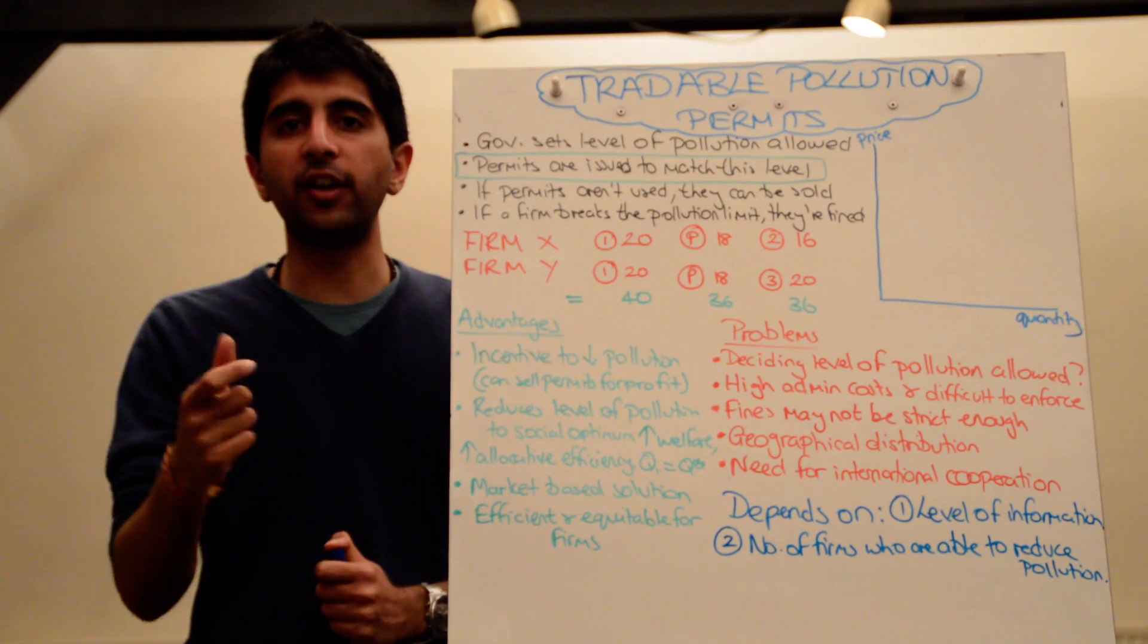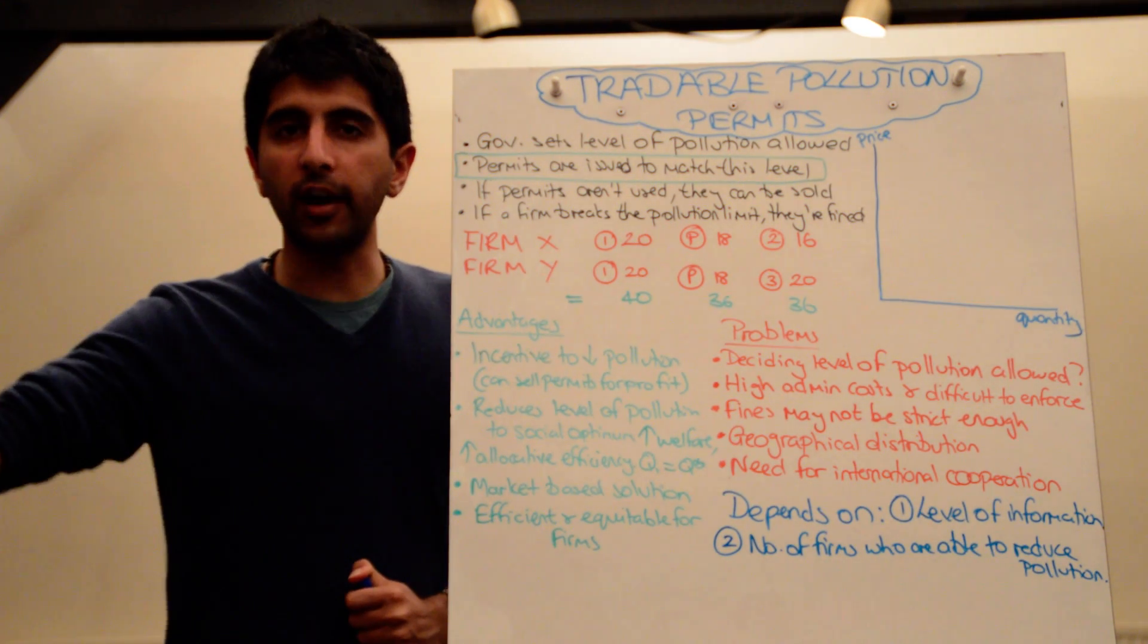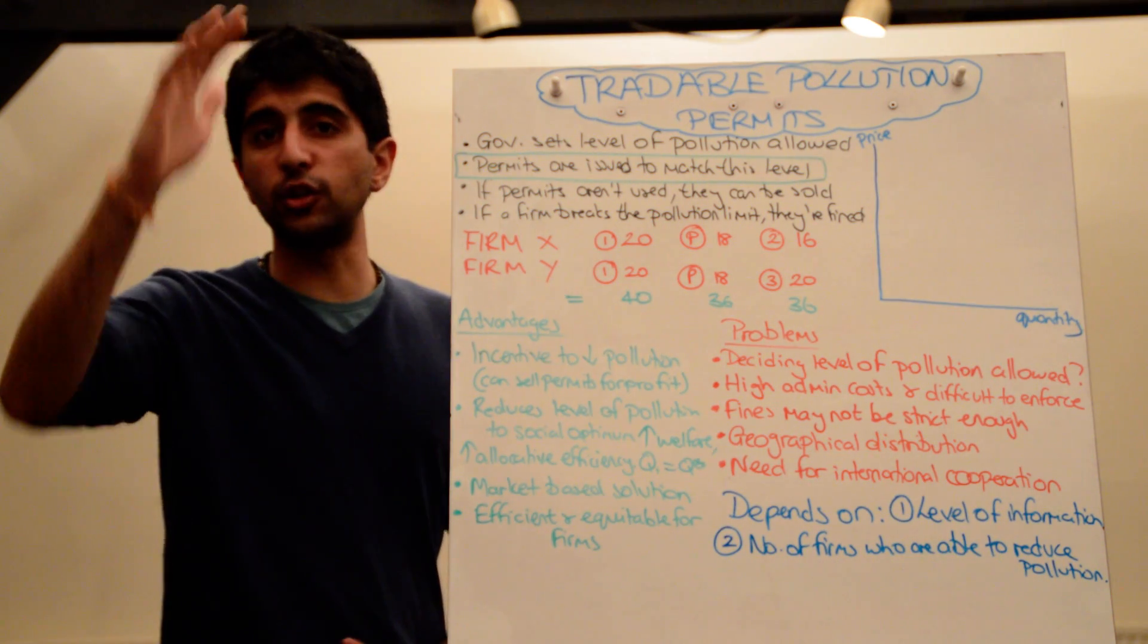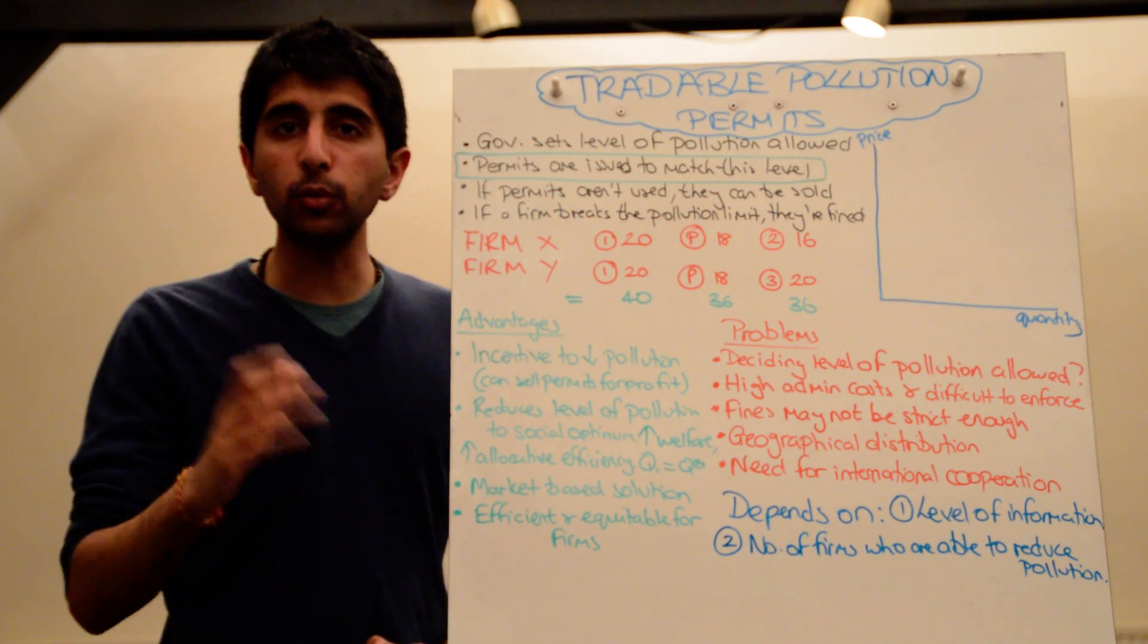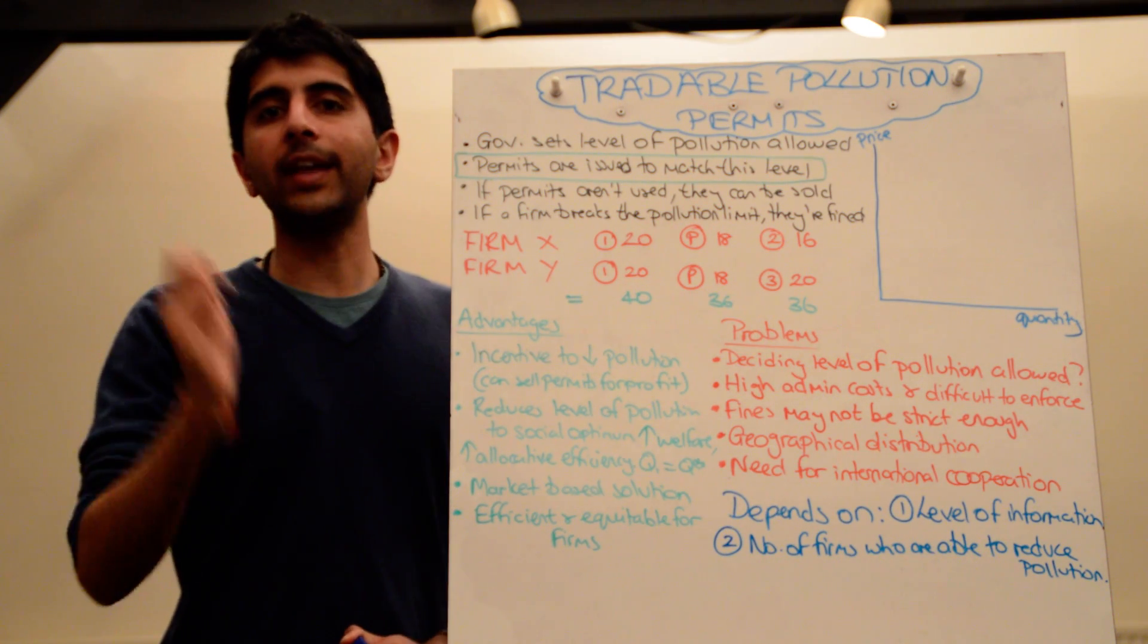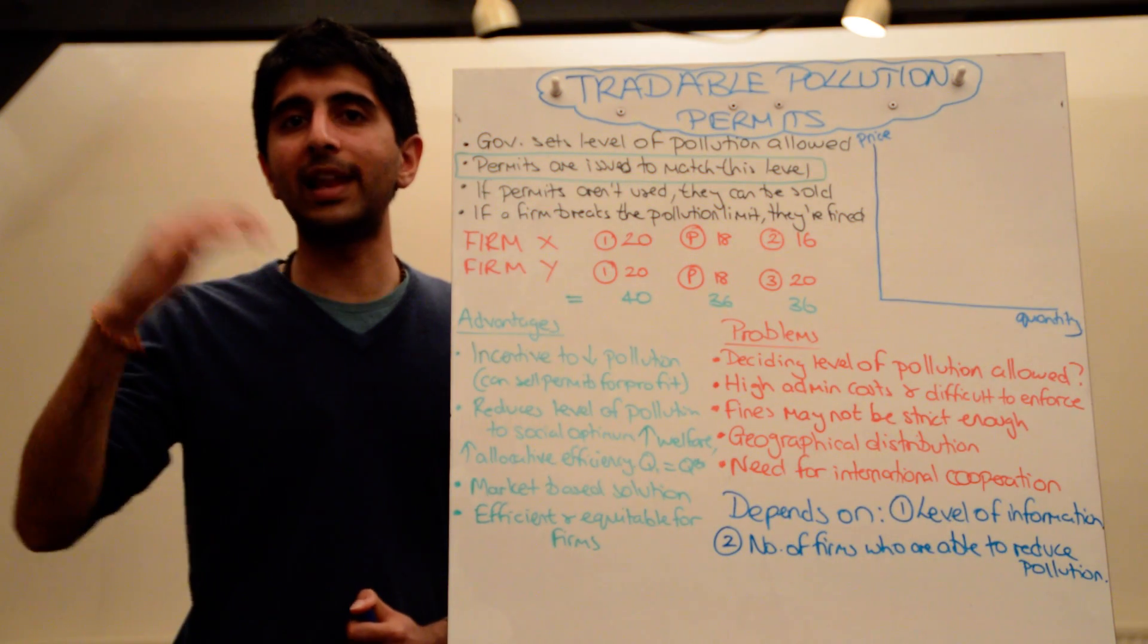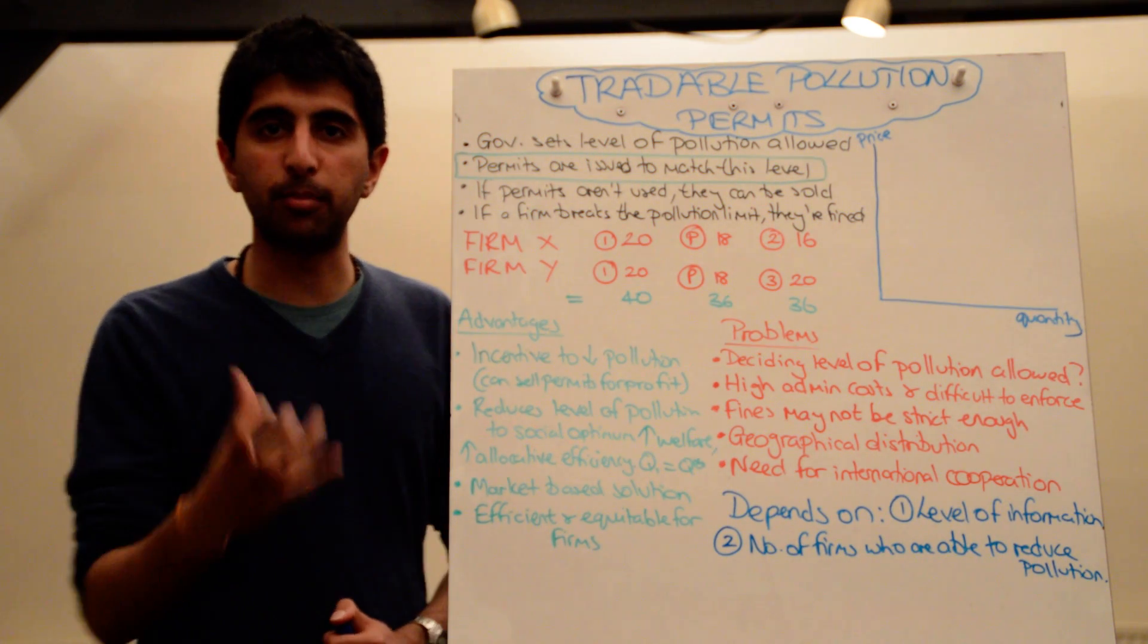So now permits, if they're not used by firms, can actually be sold on to other firms. So if some firms got excess permits, if they managed to reduce their level of pollution beyond what they needed to reduce it to, then they can actually sell those excess permits to firms who need to buy the permits to actually allow them to emit a certain level of pollution.